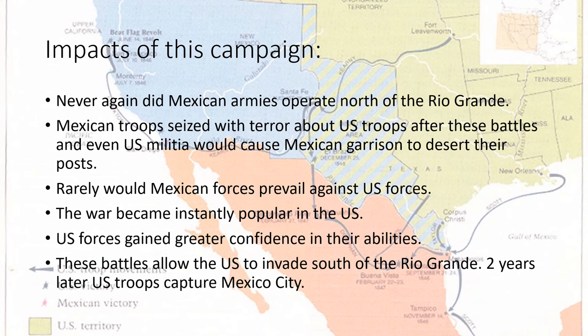There were many impacts to this campaign. For Mexico, never again would Mexican troops operate north of the Rio Grande. Mexican troops were seized with terror of the U.S. soldiers, and as the war progressed, even U.S. militia units would lead to garrisons abandoning their posts. Mexican generals lost confidence and vacillated in how they would respond to U.S. military forces, with disastrous consequences.